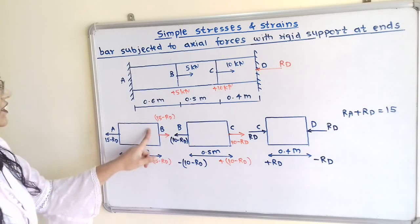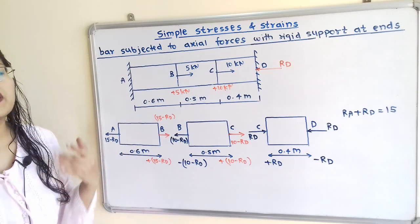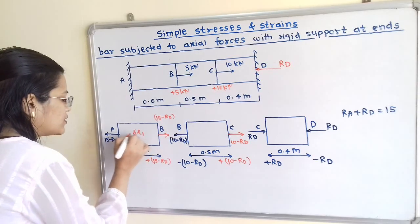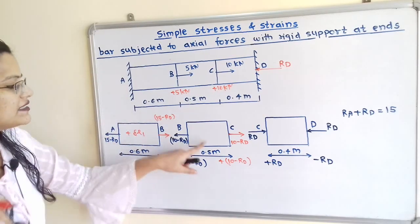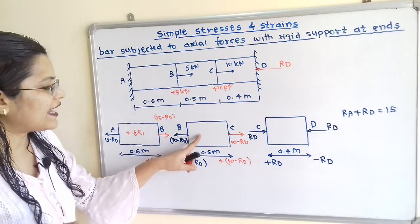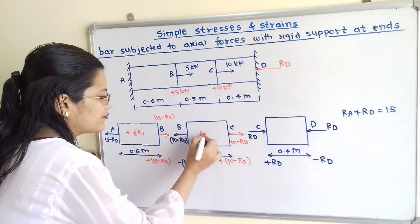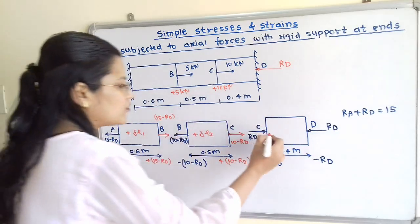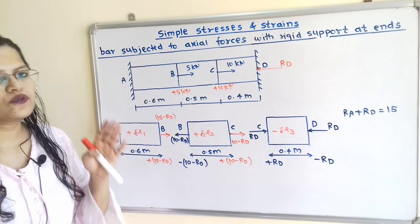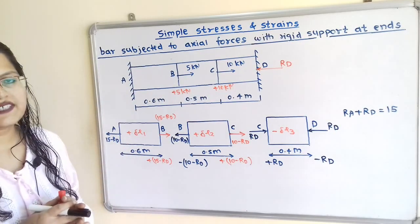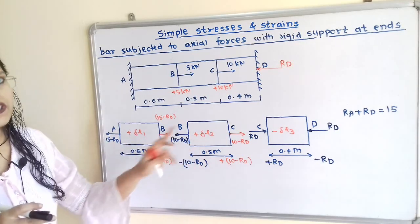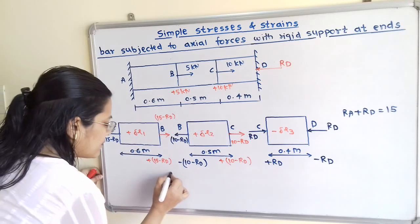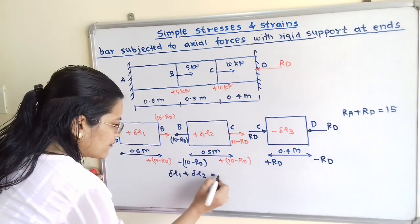In the first portion there is tensile force, so there is elongation — delta L1 is positive. In the second portion there is also tensile force, so elongation delta L2 is positive. In the third portion there is compression, so the length decreases and we show delta L3 with a negative sign. Since both ends are fixed, total elongation equals total compression: delta L1 plus delta L2 equals delta L3.